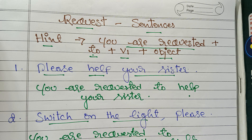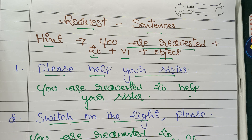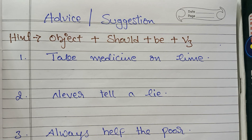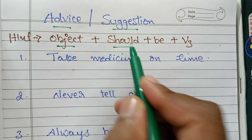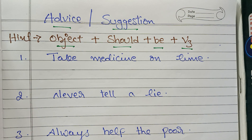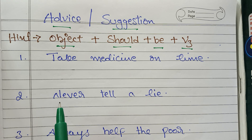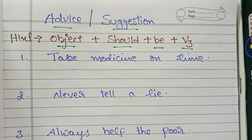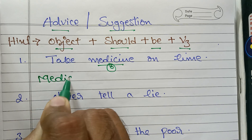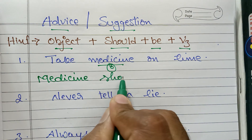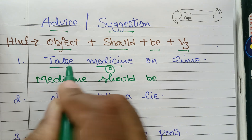Now whenever there is some kind of advice or suggestion, remember this hint: first identify the object, then use: Object + should + be + V3. Example one: 'Take medicine on time.' Medicine is the object. Start with 'medicine,' then: 'Medicine should be taken on time.'